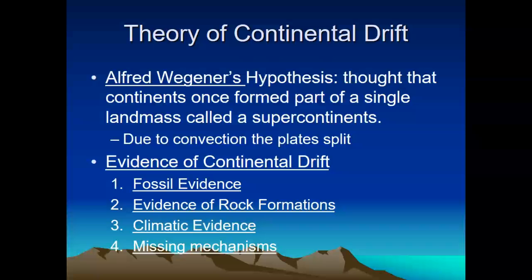With modern technology, we have satellite images, and we can actually measure the distance of how the continents are moving currently. When Alfred Wegener was proposing this idea, they didn't have that technology. So they had to rely on four pieces of evidence: fossil evidence, evidence of rock formation, climatic evidence, and the missing mechanism. But now, as geologists, we can actually measure the plate movements, as well as know how fast they are changing.